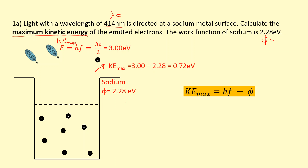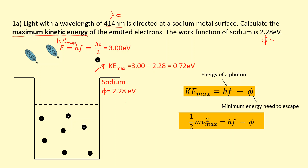Essentially, we used this equation: hf is the energy of the photon, and we subtract the minimum energy needed to escape, which is the work function, and that gives us the maximum kinetic energy. You can also use ½mv² to work out the maximum speed of the electron as well.